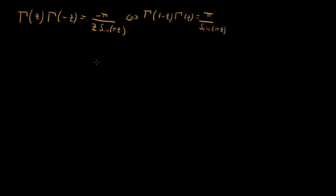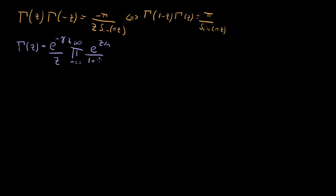How do we prove that this is true? It's actually not too bad. First, I'll start off by reminding you of the Weierstrass product form of the gamma function. We know that the gamma function can be written as an infinite product: e to the minus gamma z divided by z, times the product from n equals 1 to infinity of e to the z over n divided by 1 plus z over n. Now what we can do is evaluate the left-hand side — gamma of z times gamma of minus z — and see what happens.